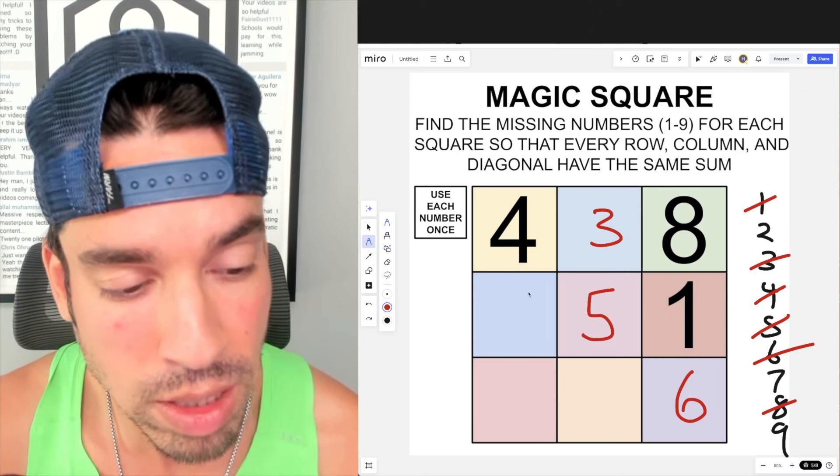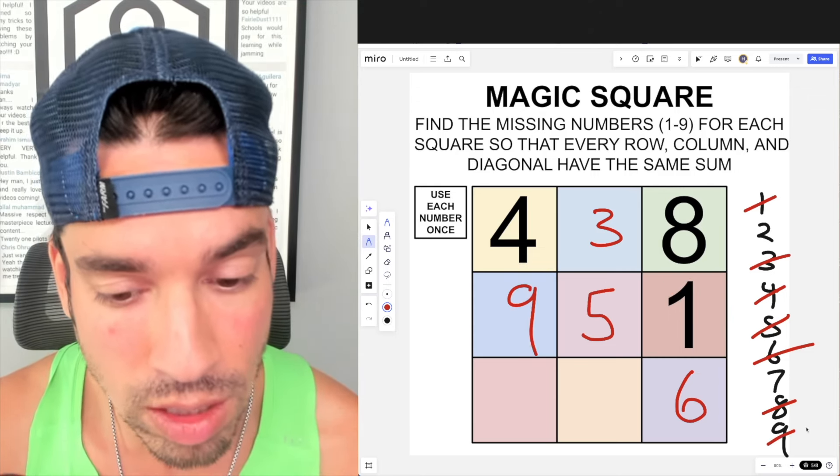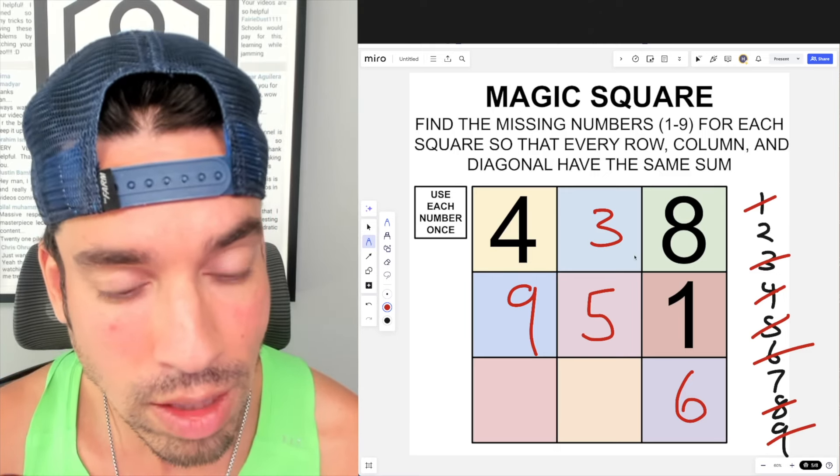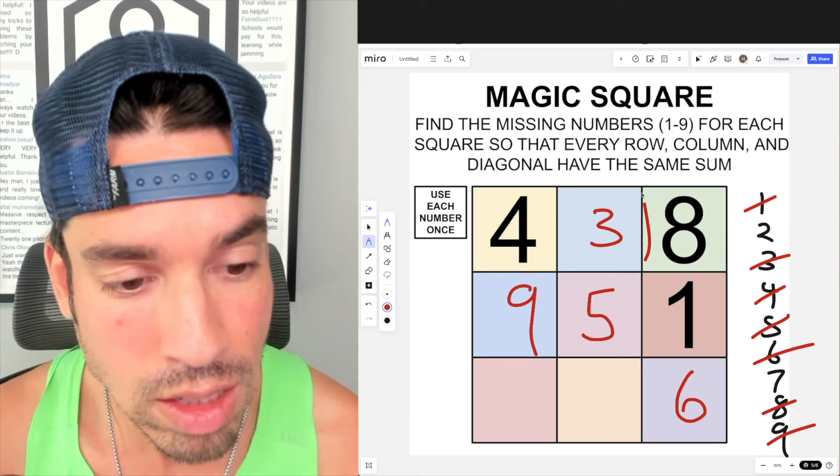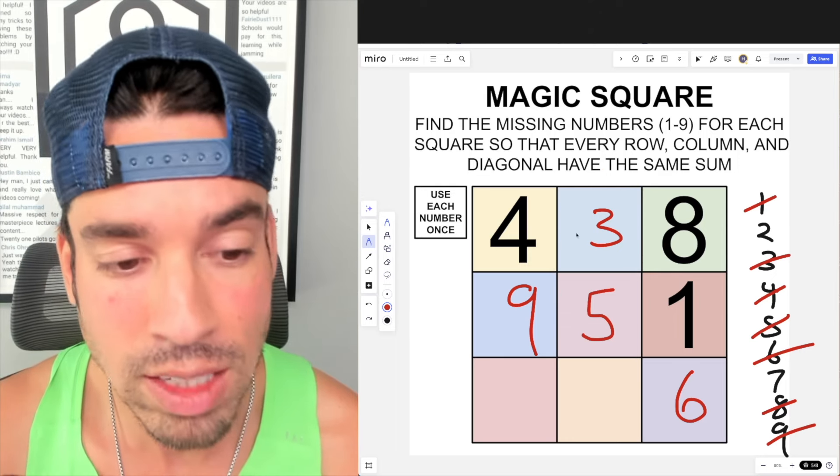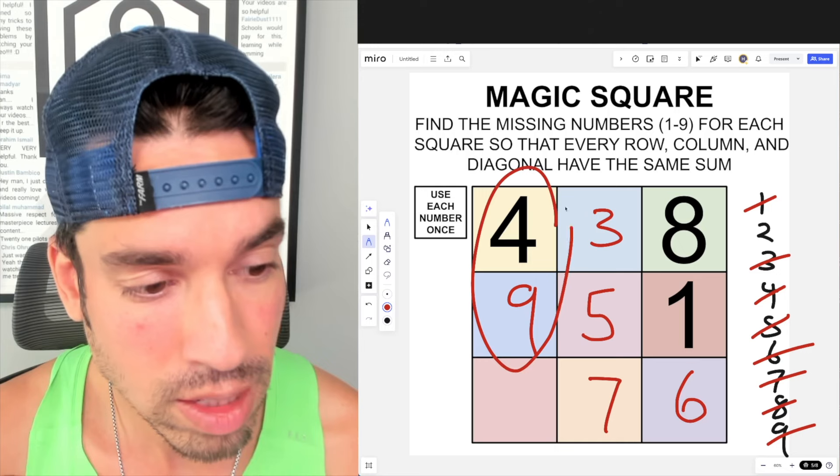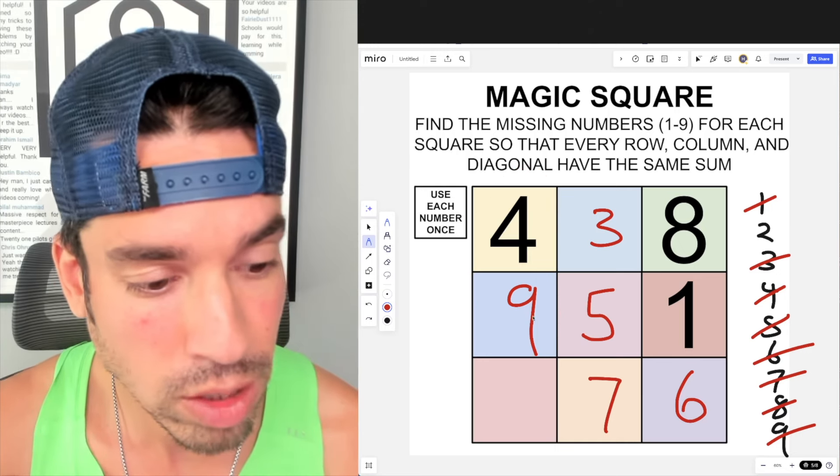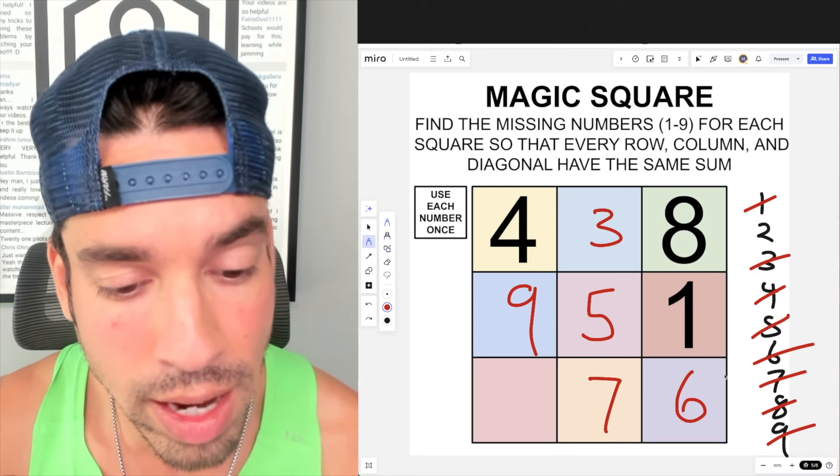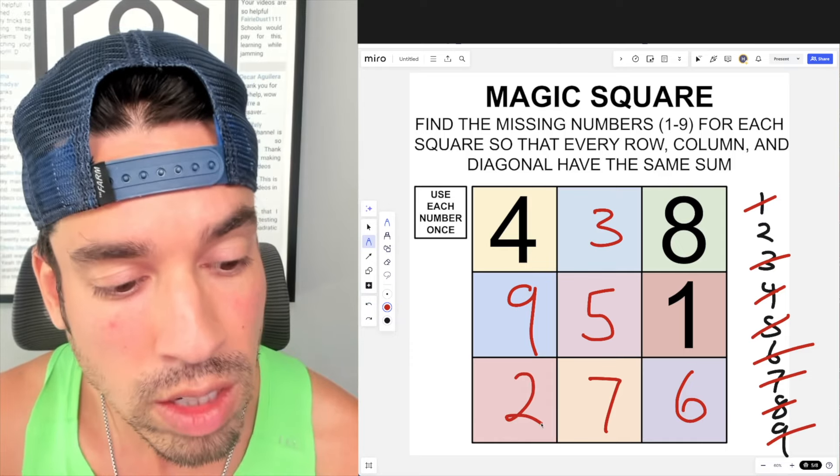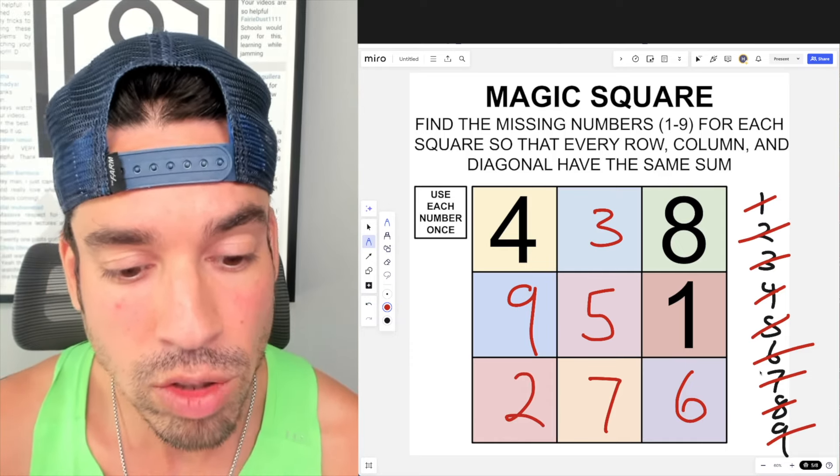All right, now we've got two numbers left: two and seven. Now let's look at the column view, that's going to be easiest. So we got three and five here, that adds up to eight. Eight plus what is 15? Eight plus seven. Last but not least, we've got this way: four and nine, that's 13. Thirteen plus what is two. And we could have gone this way as well: seven plus six is 13. Thirteen plus two gives us 15. That's how you do it. Done.